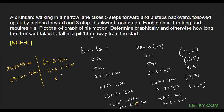Now he moves five steps forward again: eight plus five equals thirteen meters — that is the answer we were looking for. The time is thirty-two plus five equals thirty-seven seconds. At thirty-seven seconds, the drunkard covers thirteen meters and falls into the pit.